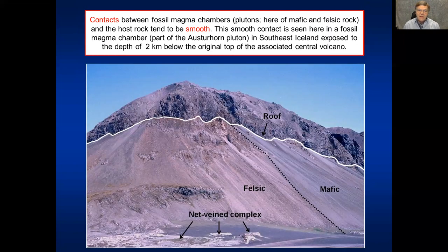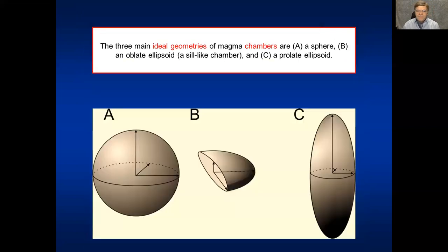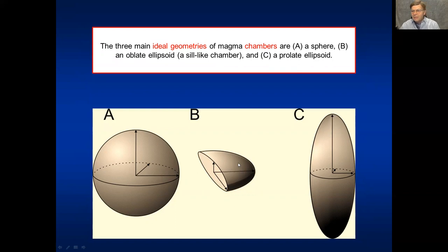In the field, looking at the contact between a partly felsic and partly mafic fossil magma chamber and its roof, the contact is relatively smooth. We see this everywhere with fossil magma chambers — smooth contacts, not highly irregular ones, because of the thermal and mechanical stability that must be achieved. The ideal geometries used as basic models are a spherical chamber, an oblate ellipsoid referred to as a sill-like magma chamber, and a prolate ellipsoid. The sill-like chamber is probably the most common and can be a pure oblate ellipsoid or a tunnel-shaped one.